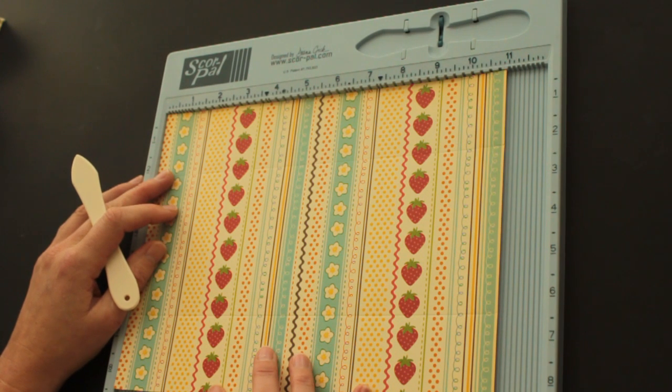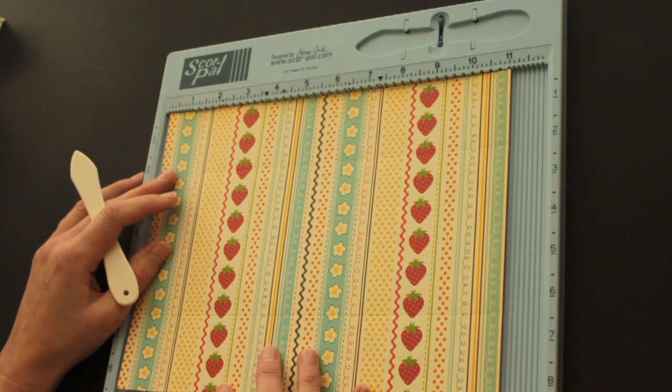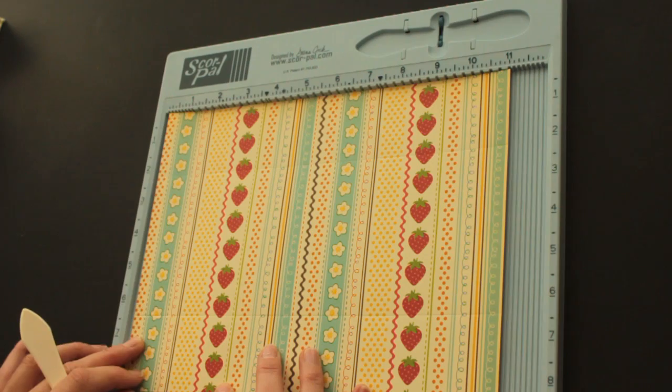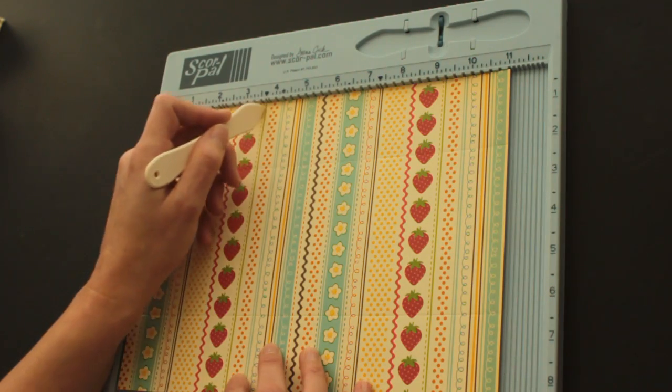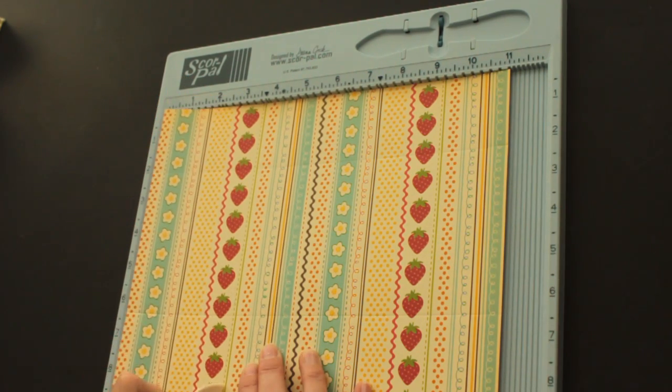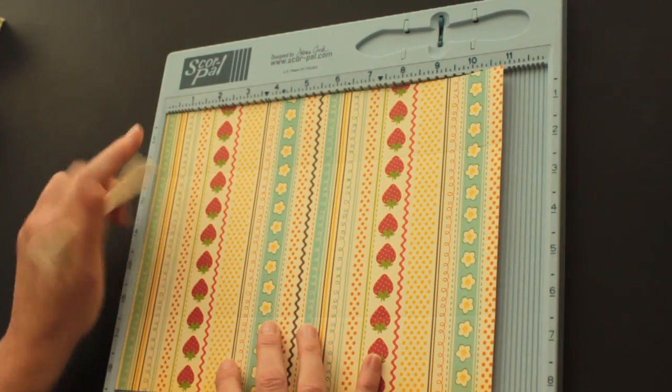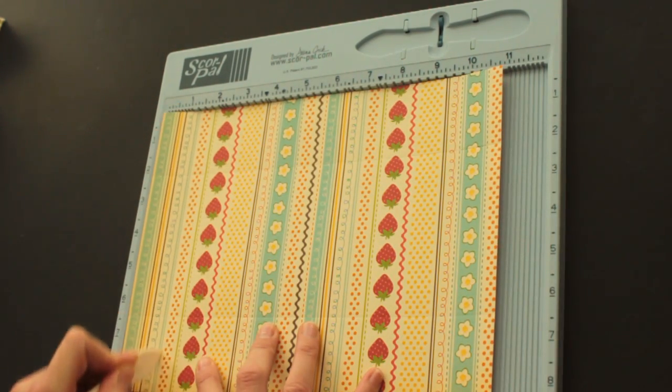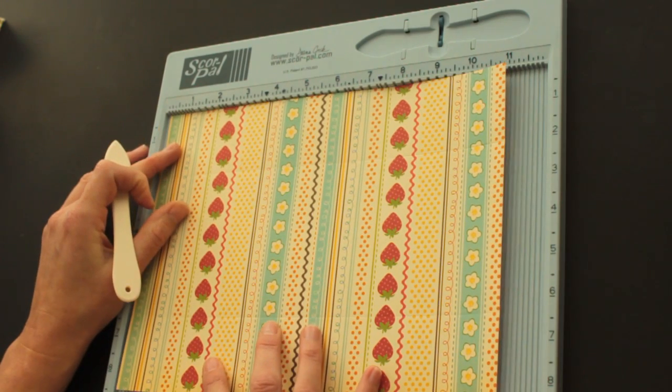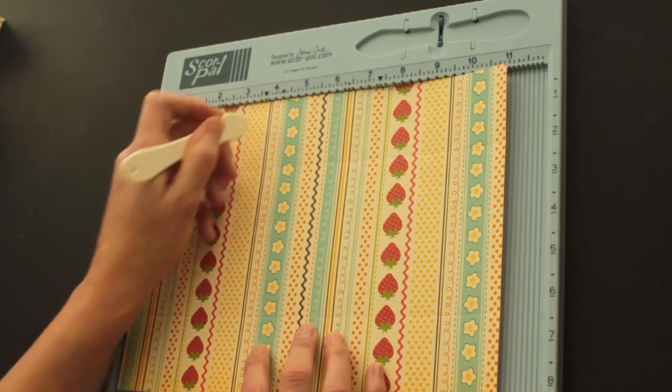Now the score pile doesn't have a 3 3/8, so I move it over to the 1/8 of an inch score groove and score it at 3 1/2. Then turn that paper and do the same on the other side. Score it at 1 1/4 and move the paper over and score at 3 1/2.